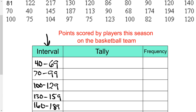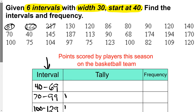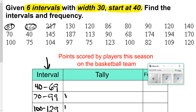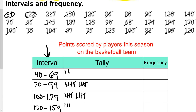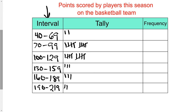Before I do that, I'll show you just how it starts. My first data point is 81 — 81 lies between 70 and 99, so that gets a tally there. 122 lies between 100 and 129, so that gets a tally there. 217 is in the last interval, and so on. I went through one at a time, crossed them off as I went, and now we've got all our data points tallied.